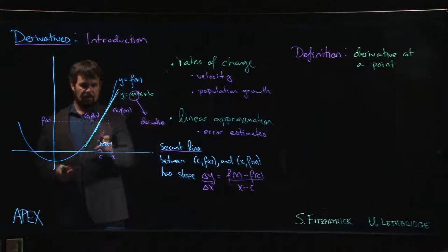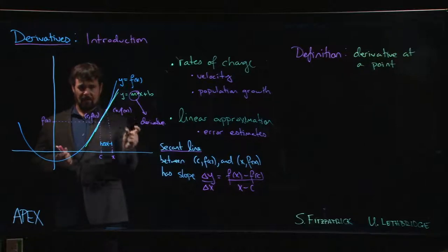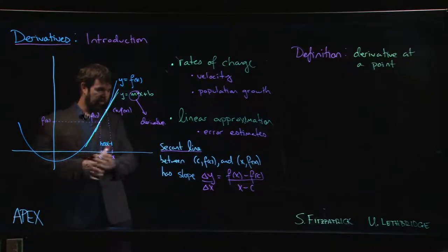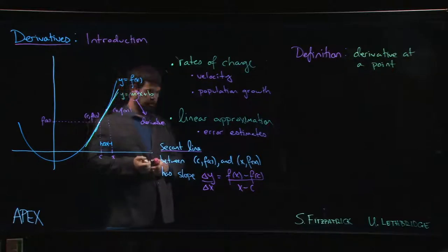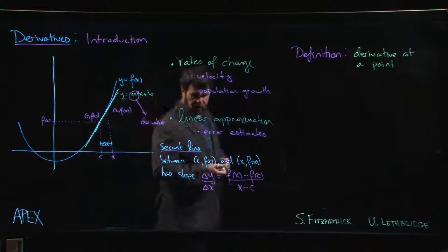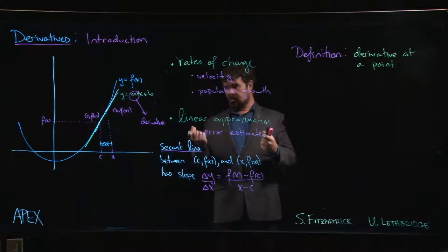So we have this idea of the secant line passing through those two points, and this is like an average rate of change over a very small interval. We want to think of this delta x as very small, and so if we keep shrinking it, what's going to happen is we're going to get a limit.